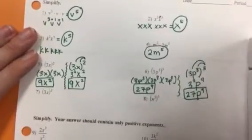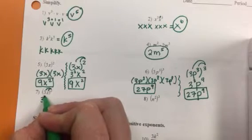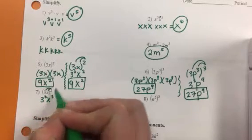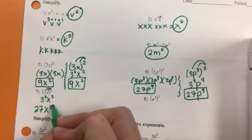So on this one, I'm just going to distribute that power in. 3 cubed is 27. x cubed stays the same.